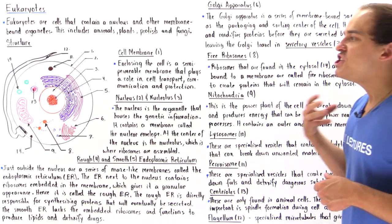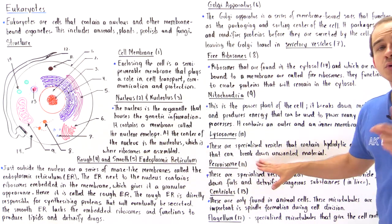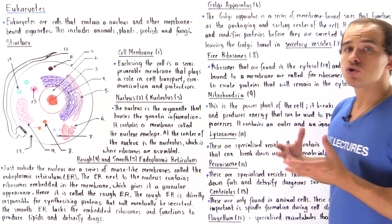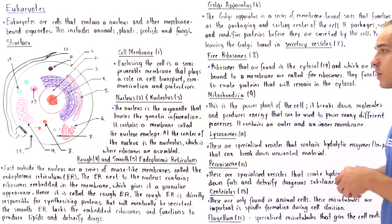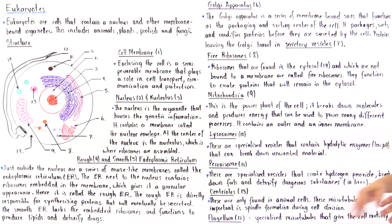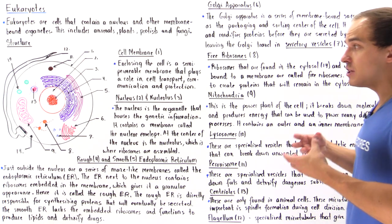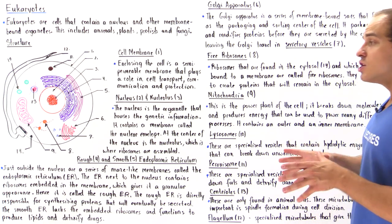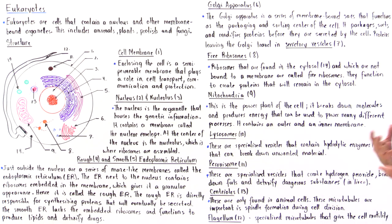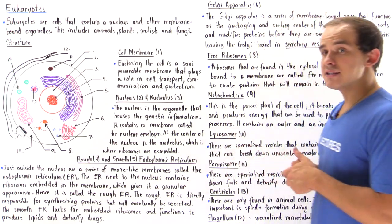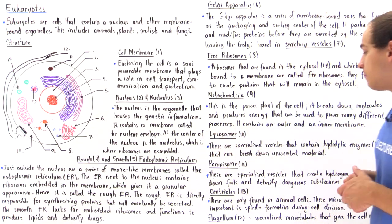Another type of specialized vesicle is the peroxisome, also known as microbodies — very small bodies with their own internal environment. Peroxisomes create hydrogen peroxide (H2O2) and function to break down fats as well as detoxify dangerous substances, especially in the liver. The cells of the liver contain lots of peroxisomes because they must break down toxins we ingest, such as alcohol.